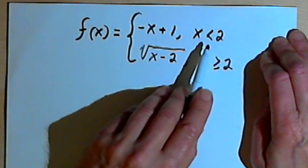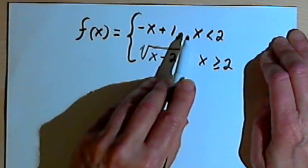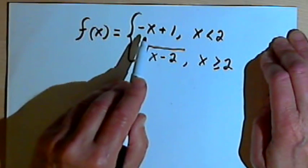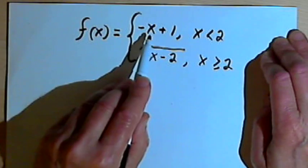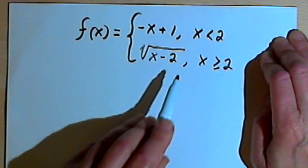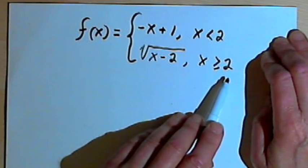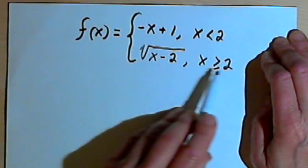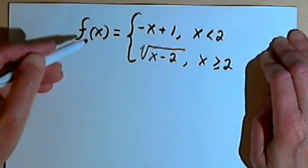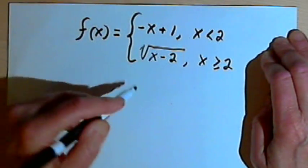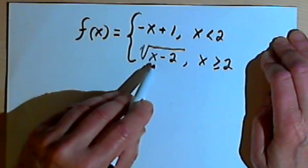Any part of the graph where x is less than 2 will follow this first set of instructions that says make f equal to negative x plus 1. Whenever x is equal to or greater than 2, I'll use the second set of instructions which says I should make f equal to the square root of x minus 2.